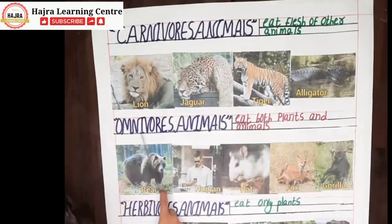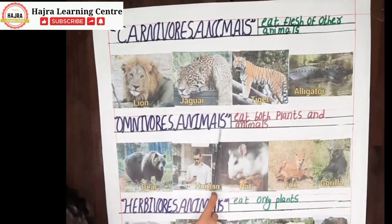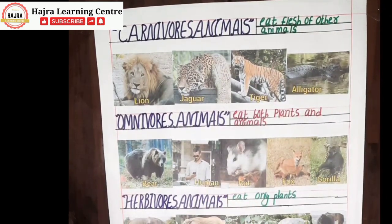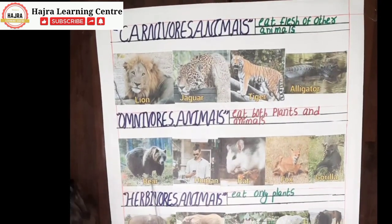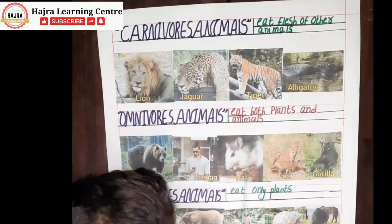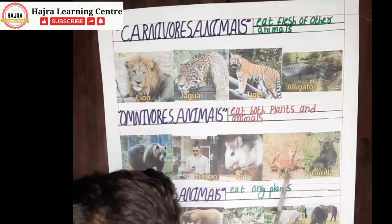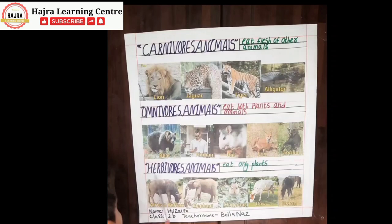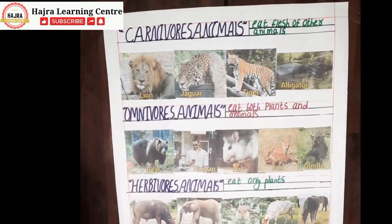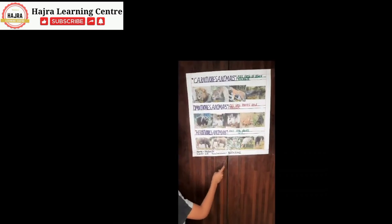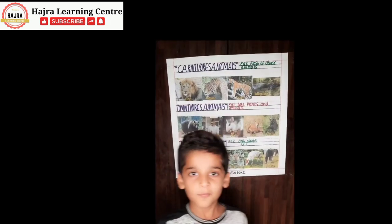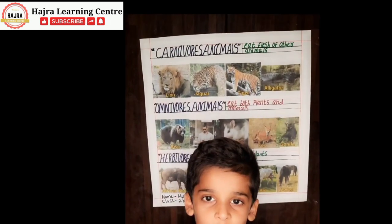Omnivores are animals that eat both plants and animals. For example, bear, human, rat, fox. Herbivores are animals that eat only plants. For example, elephant, chipmunk, cow, horse. Thank you very much.